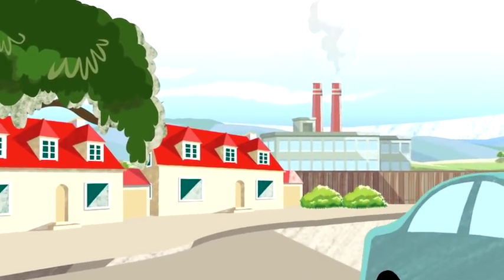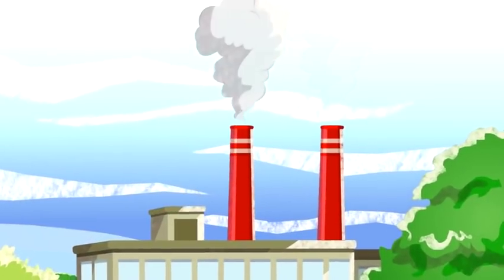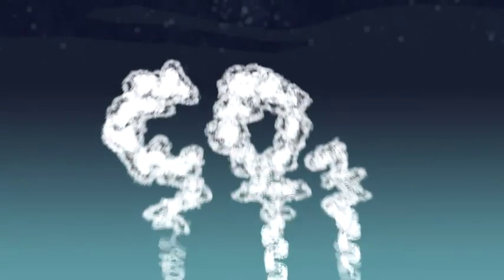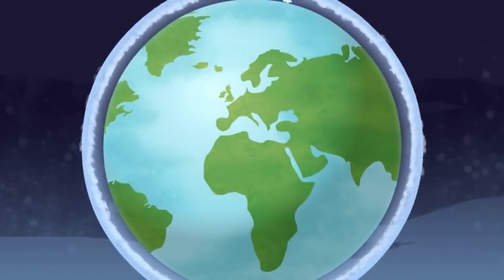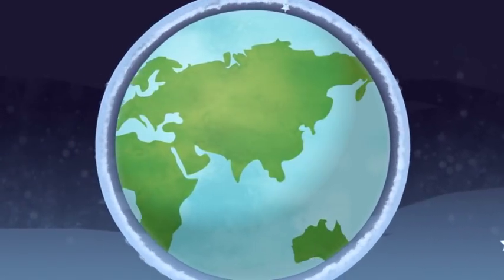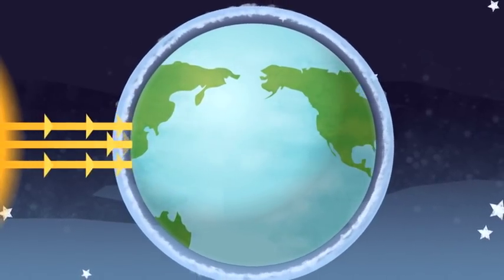Burning any fossil fuels releases a gas called carbon dioxide, or CO2. The CO2 gets trapped in the Earth's atmosphere. The build-up of CO2 allows the sun's rays in, but doesn't let the heat out.